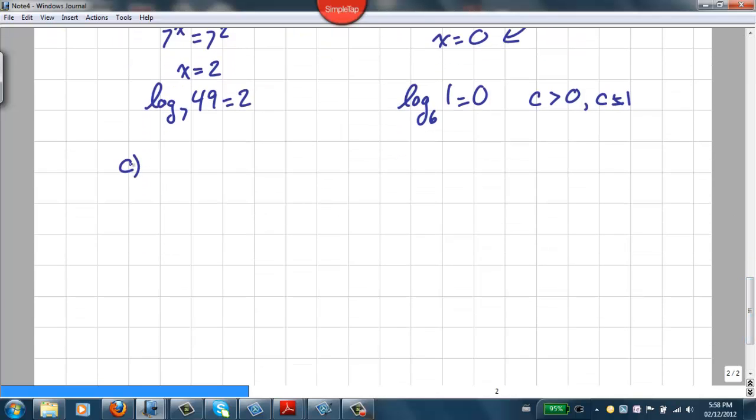Third example. c is log of 0.001. Now you'll notice there's no base here, and that's because this is a common log. And for the common log, the base is always 10.